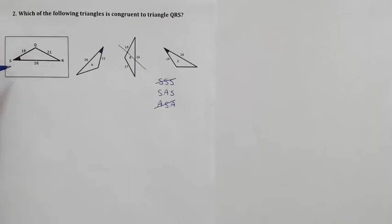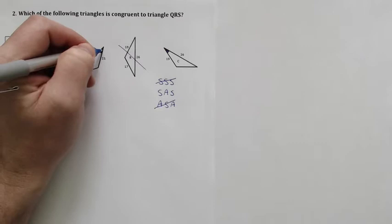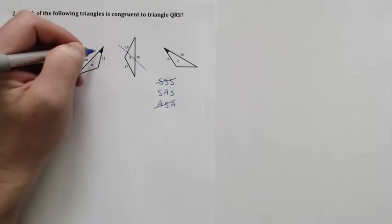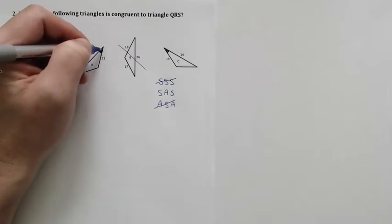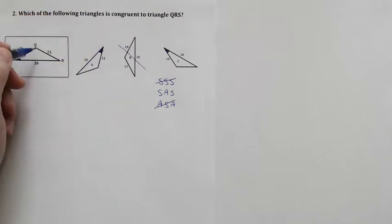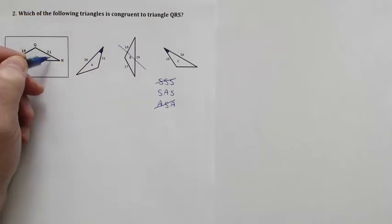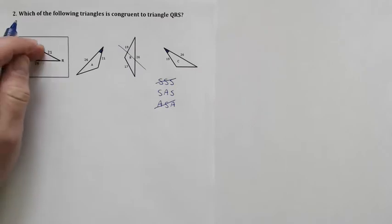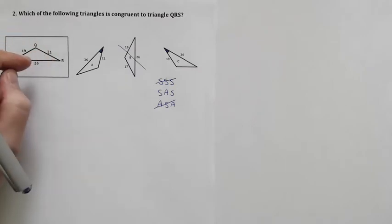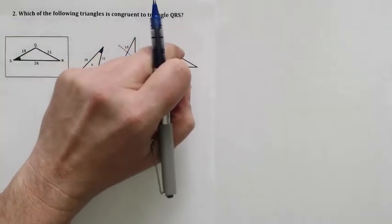If you look at triangle A, it's formed by a 26, but it's formed by 26 and a 21, not a 26 and a 19. The 21 is opposite over here; it doesn't fit or factor into a side-angle-side.